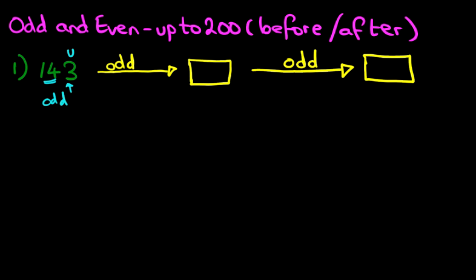Now if this is an odd number and we want to work out the next odd number, what do we do? We count in twos. The odd numbers go one, three, five, seven, nine. So we are simply going to count in twos going forwards. We've got 143 — let's count in twos, two jumps. One and two: the number after 143 is 144, and the number after 144 is 145. That is correct — we've gone from 143 to 145.